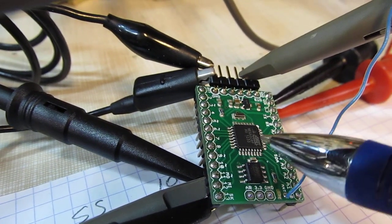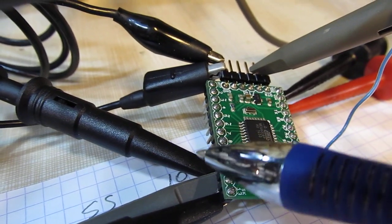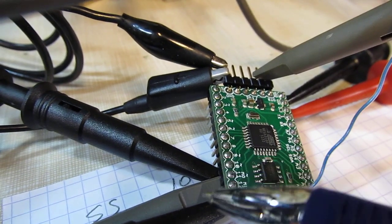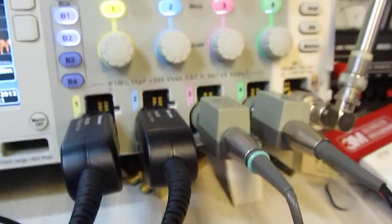And then it's also communicating with the RFM-12B module using an SPI bus and the three lines for that, the slave select, the clock, and the master in slave out data lines are also being probed with the scope.